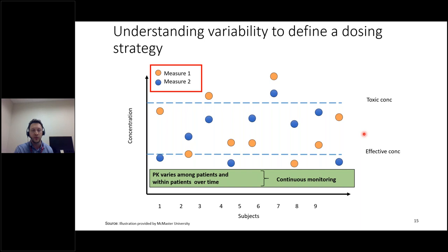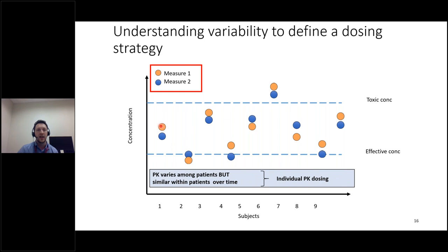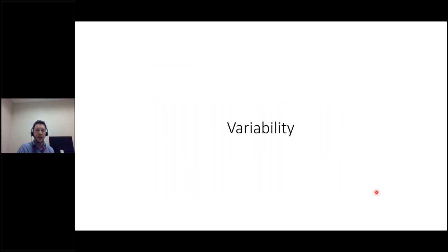This graph is just an example to understand this concept. If the first measurement from the second one is so different within the same subject, you can have the concentration go outside the therapeutic window. So the only thing you can do is constantly monitor, and this is the case for drugs like warfarin. But the case of clotting factor concentrate is more like this: if you repeat two measurements in the same individual, you will have similar concentrations, but there's a lot of variability between subjects. So you can use a pharmacokinetic-guided dosage.